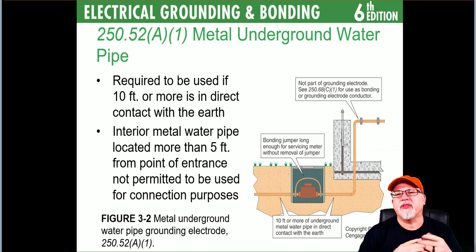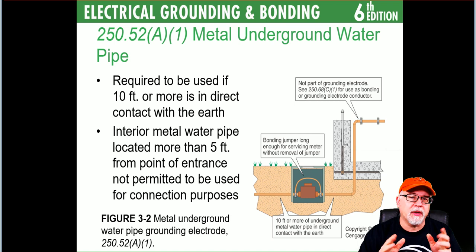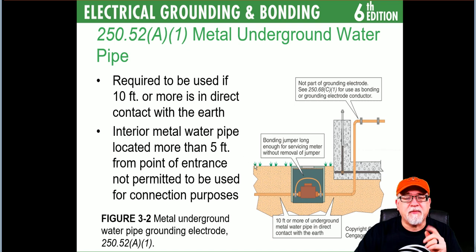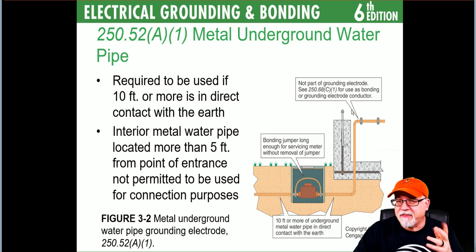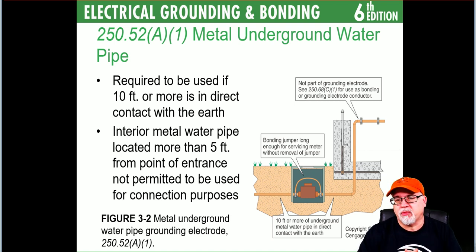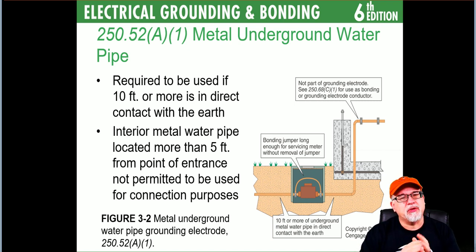250.52(A)(1) — the metal underground water pipe: required to be used if 10 feet or more in direct contact with the earth. If it's not 10 feet or more in contact with the earth, it cannot be used as an electrode. Interior metal water piping located more than five feet from the point of entry is not permitted for connection purposes — you have up to five feet to make connections to other electrodes. There is an exception in commercial applications where it's unobstructed.